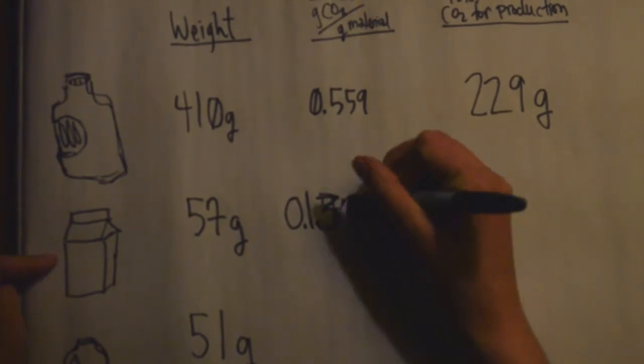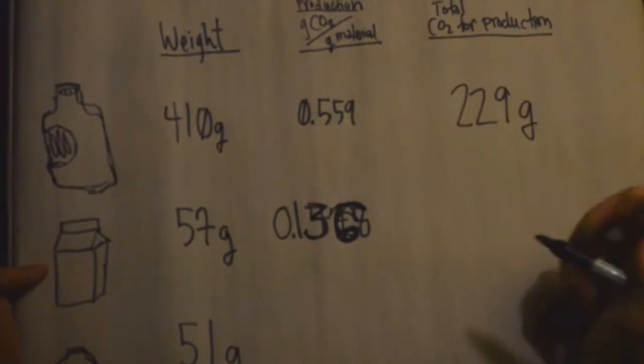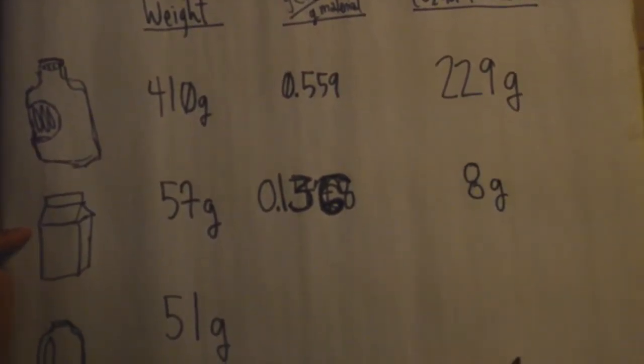For paper, we found that it's 0.136 grams of CO2 per gram of material, which equals 8 total CO2 grams for production.